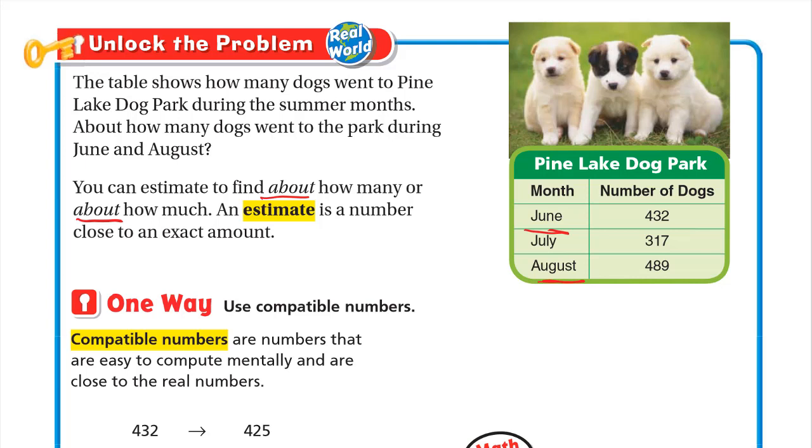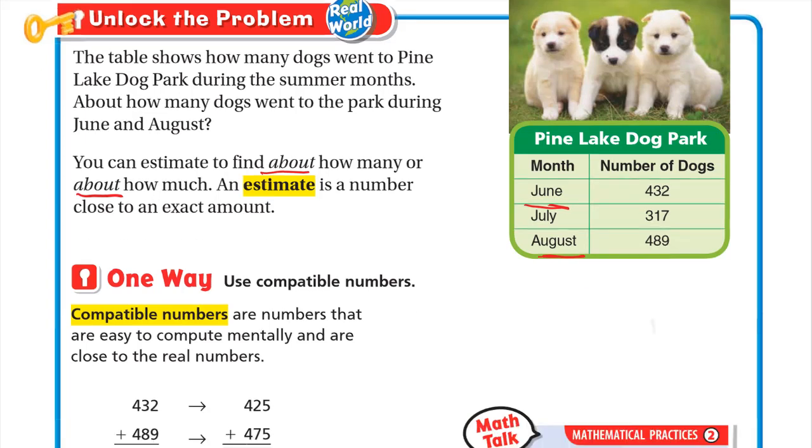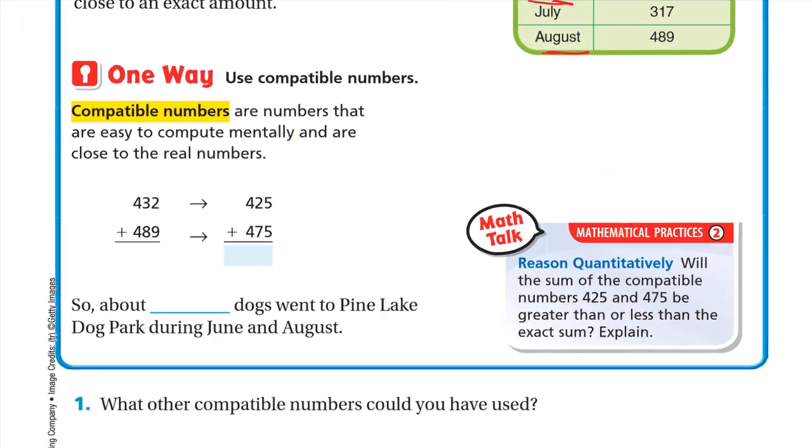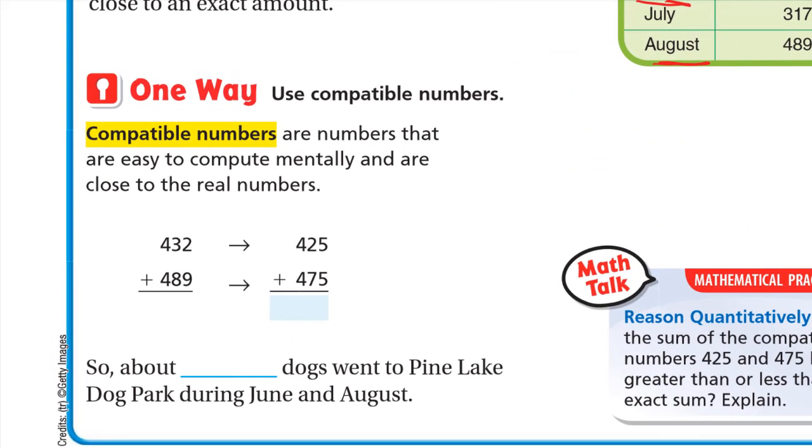In June it was 432 dogs and in August 489 dogs. So instead of 432 and 489, we need easier numbers to deal with. One way is to use compatible numbers. Compatible numbers are numbers that are easy to compute mentally and are close to the real numbers.